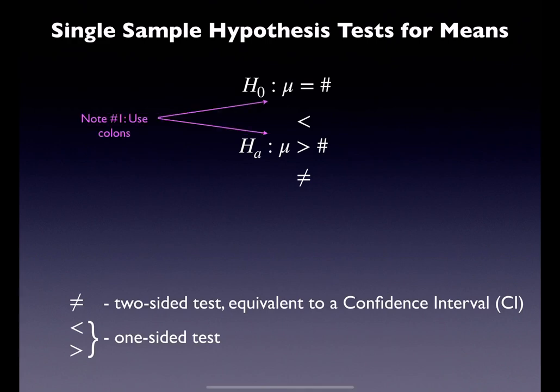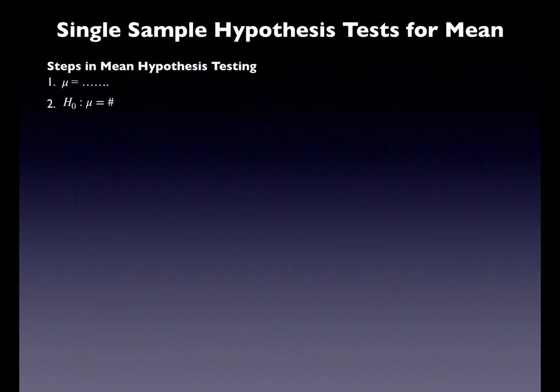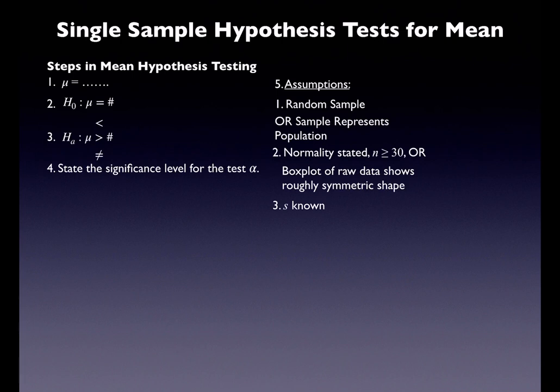Mean land works the same way, except now we use mu. Colons, parameters, equal sign in the null, alternate symbol from context. A not-equals-to alternate is a two-sided test; less than or greater than gives you a one-tailed test. For assumptions: still want a random sample. Normality can be established if the population is stated to be normal, the sample size is large enough for the central limit theorem to kick in, or a graph of your raw data — box plot, histogram, dot plot, stem and leaf, or normal probability plot — shows a roughly symmetric shape with no outliers. Also state your sample standard deviation.